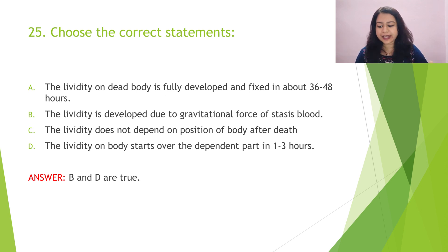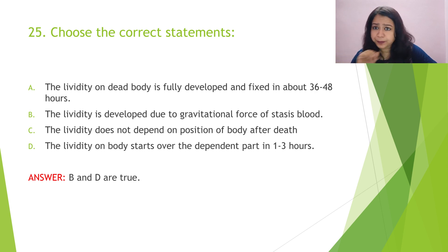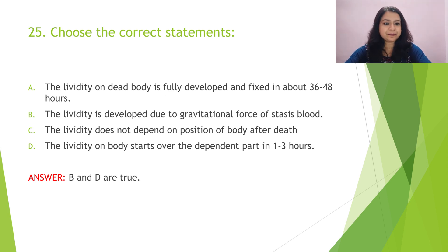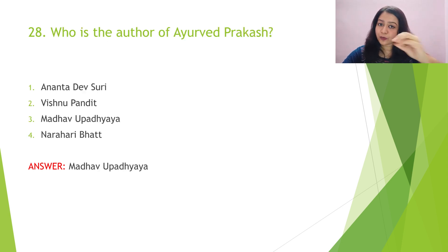Question 26: According to Charaka, how many types of takra are mentioned? Charaka Acharya has mentioned takra in detail in multiple contexts. The answer is three. Question 27: Which material is used for making takta khalma? The answer is loha, and more specifically it is kanda loha. We have now moved on to the Rasa Shastra part of the question paper.